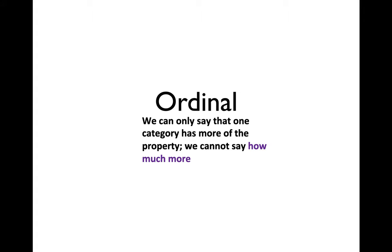How is ordinal different? Ordinal introduces a rank order. The categories are still mutually exclusive and exhaustive — every observation goes into one and only one category, and there's always a category for it. But with ordinal we actually have an order, so we can say there's more or less of something. The key for ordinal data though is that we can only say one category has more of the property — we cannot say how much more — because we do not know if the distance between each category is equal.